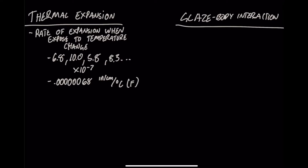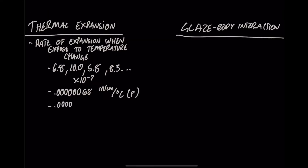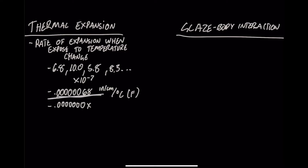That is a very small number, and it doesn't seem like it matters — but if you think about how big an atom is, an atom is about 0.0000000001, depending on which atom you're talking about. So that expansion number is actually quite large on an atomic scale, and depending on which elements you have and the expansion you have, it can be pretty drastic.